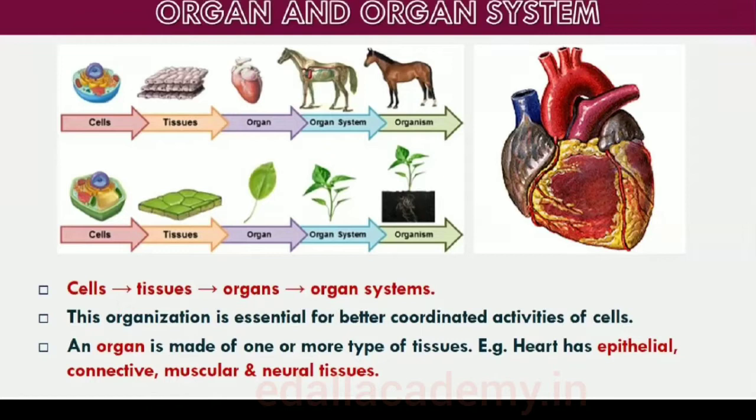The human body is composed of billions of cells to perform various functions. How do these cells in the body work together? In multicellular animals, a group of similar cells along with intercellular substances perform a specific function.